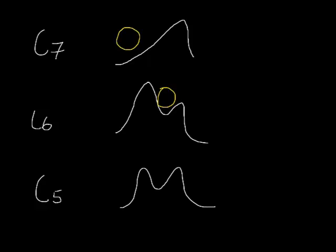In the case of C5, both the tubercles are of equal height and the nerve root lies between these two tubercles.